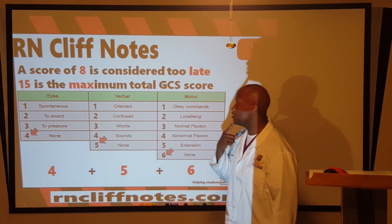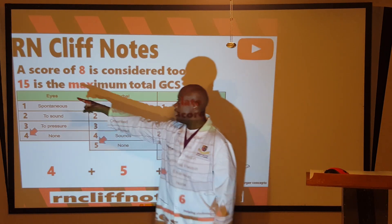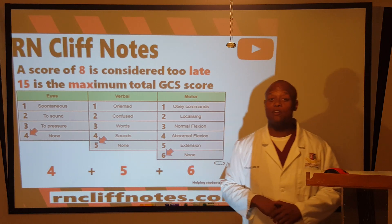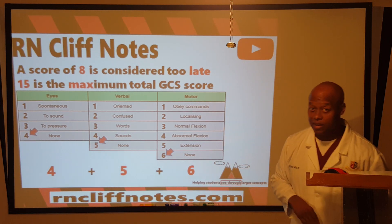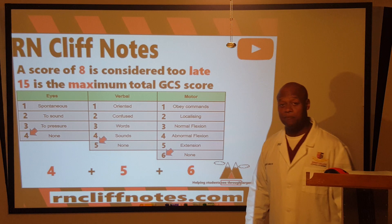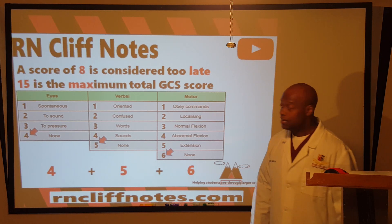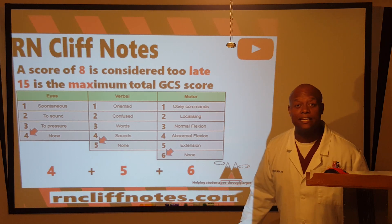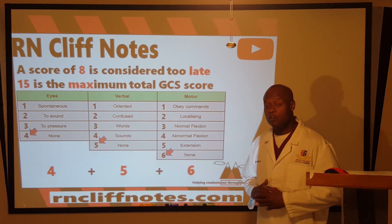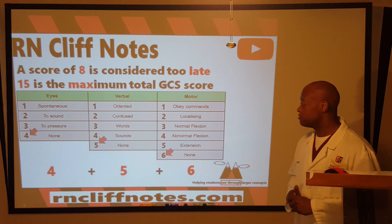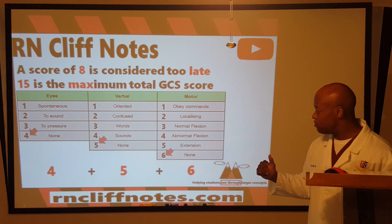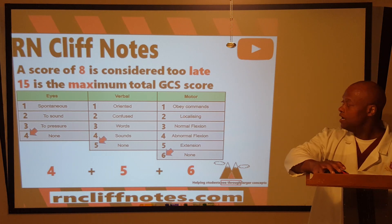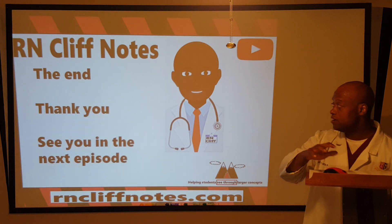Earlier we mentioned a number that worries us. The thing to remember is: a score of eight and we are too late. We are responding to that person too late — they're in critical, critical need. Eight is not far from three, and three is practically dead. A score of eight and we are too late. Our maximum category scores are four, five, and six.